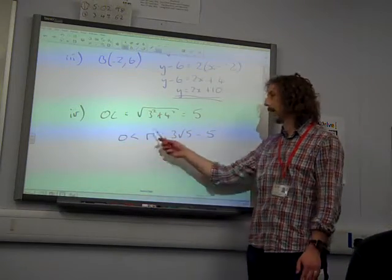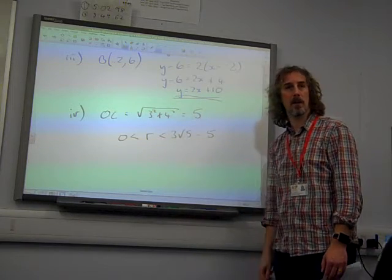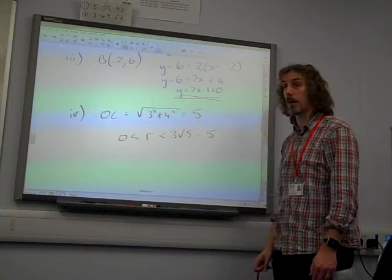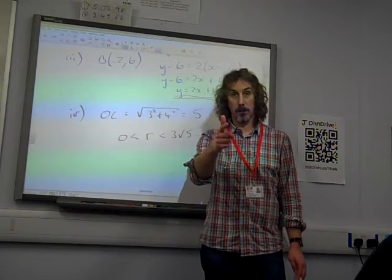So, clearly, the radius has to be bigger than 0, but it has to be less than that little gap that's left, which is that. If you wrote root 45 minus 5, that's absolutely fine. And that's some circle of maths. Thank you.